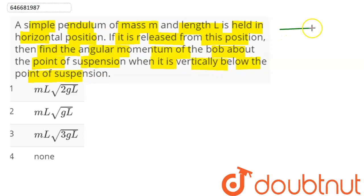Hence we can say here initially the pendulum of length L and mass m, this here is the point of suspension, let's say point P. Now this length is L and mass m is held horizontally.